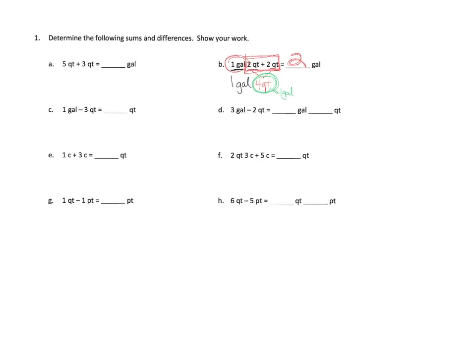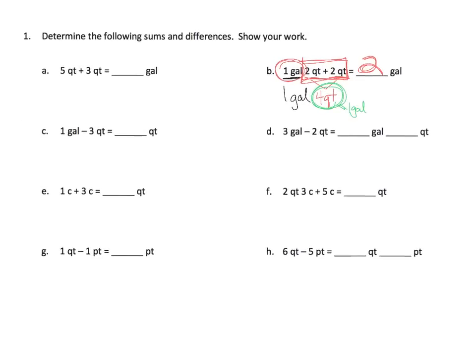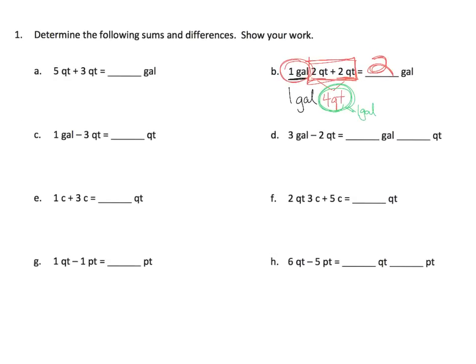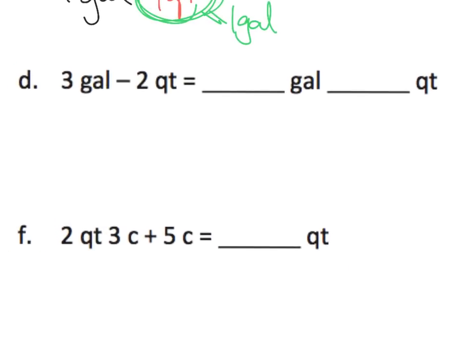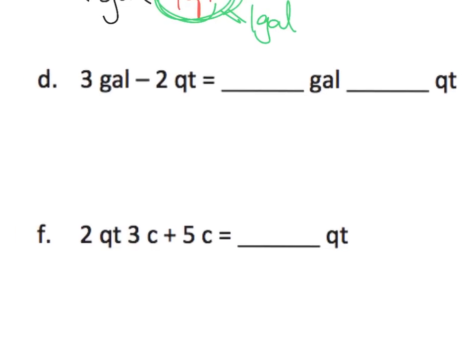So that's equal to one gallon, meaning we really have two gallons here — one gallon plus these four quarts make another gallon. That's the idea of what we're going to be doing. Now we can subtract as well, so let's take a look at this next example.